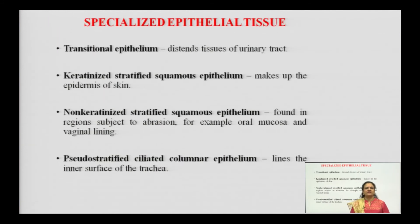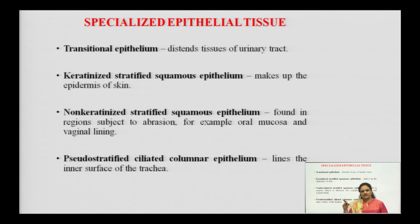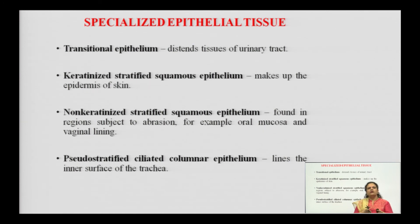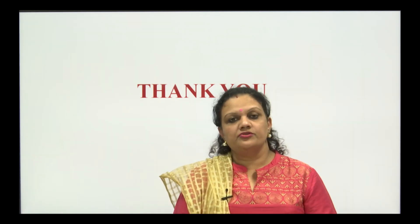There are four specialized epithelial tissues: transitional epithelium — lining the urinary tract; keratinized stratified squamous — making up the epidermis of skin; non-keratinized stratified squamous — found in regions subjected to abrasion such as oral mucosa and vaginal lining; and pseudostratified ciliated columnar epithelial tissue — lining the inner surface of the trachea. This is all about today's lecture. See you in our next lecture about another type of tissues. Bye-bye.